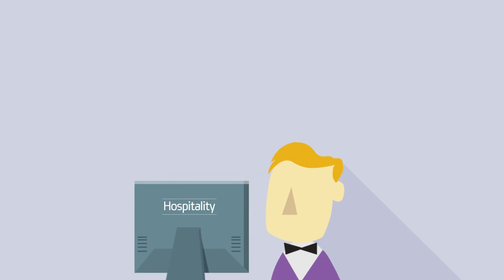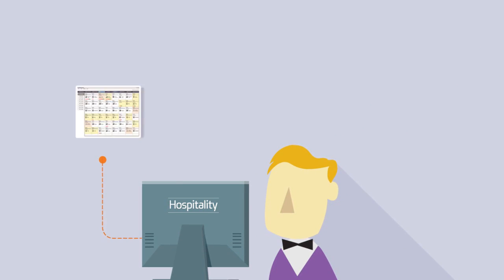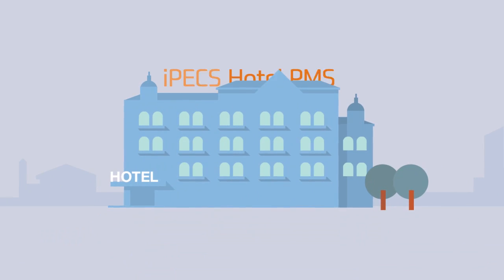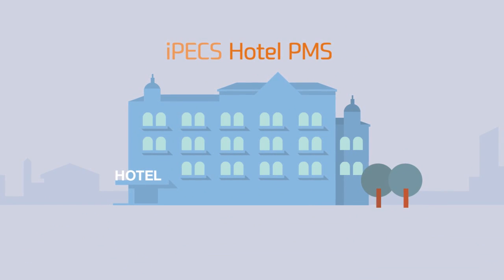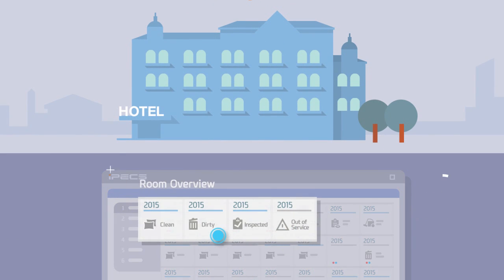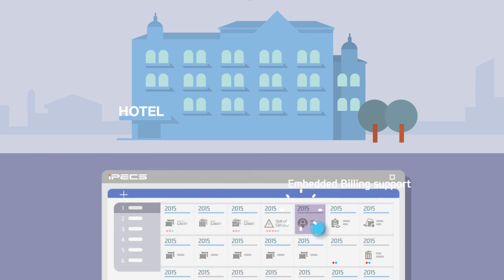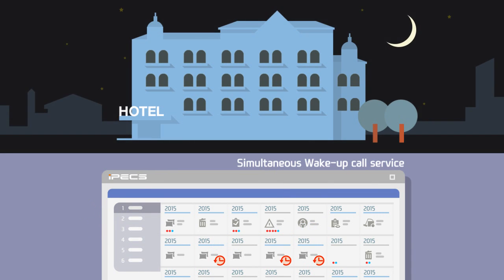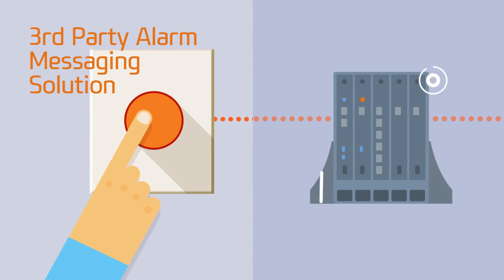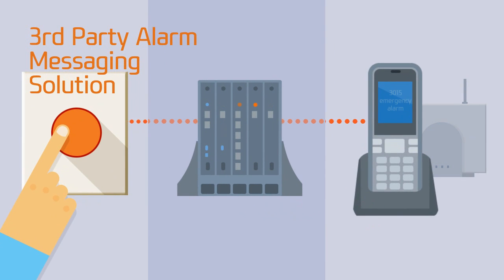The Hospitality Solution improves guest experience and increases staff productivity. IPEX Hotel PMS features a simple and intuitive user interface for managing customer services, including room overview, status management, embedded billing support, and simultaneous wake-up call service. IPEX UCP also provides integration with third-party alarm messaging solutions — when a customer pushes the alarm button, the signal is sent to the IPEX UCP, which then sends an alarm message to the staff.